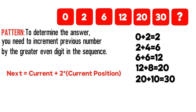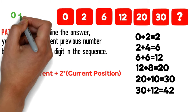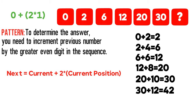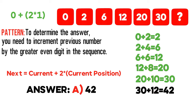Let's see how it works. Take the number 0 — this is the first number. Instead of using the formula, you can add the next even number to the previous number. The even numbers are 2, 4, 6... so: 0 plus 2 equals 2, then 2 plus 4 equals 6, then 6 plus 6 equals 12, then 12 plus 8 equals 20, then 20 plus 10 equals 30, and finally 30 plus 12 equals 42. The correct choice is A, 42.